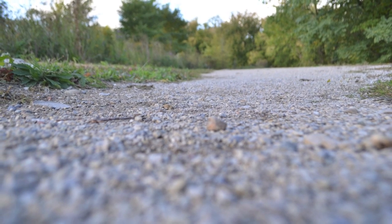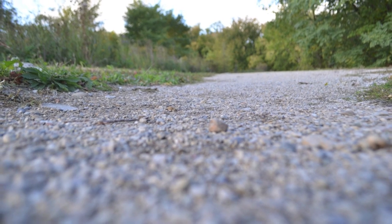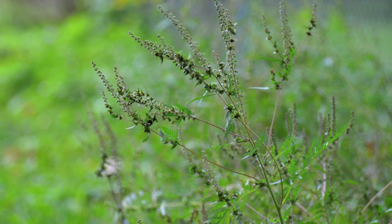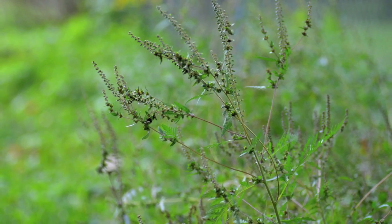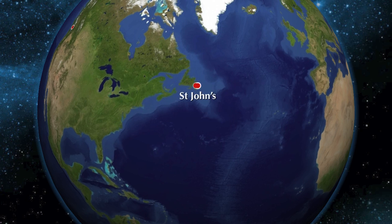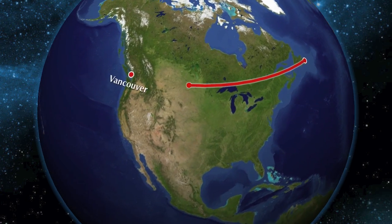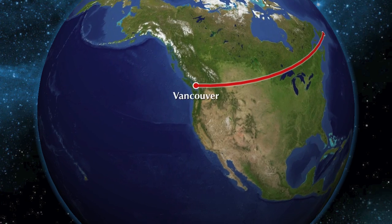Ragweed is most commonly found in disturbed soils like fields, roadsides, and turf. It is commonly found in southern Ontario as well as all over North America, other than Alaska, Yukon, and Nunavut.